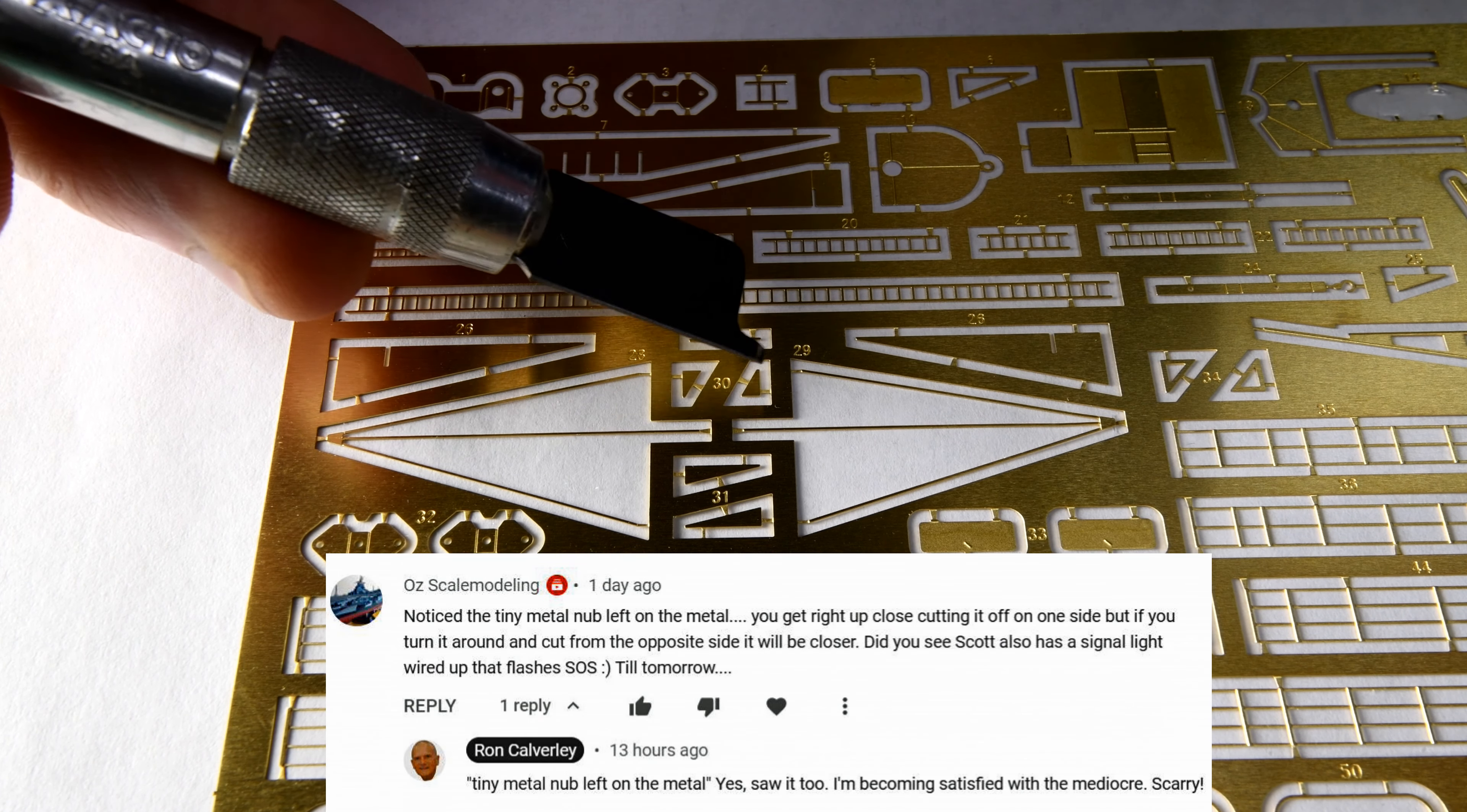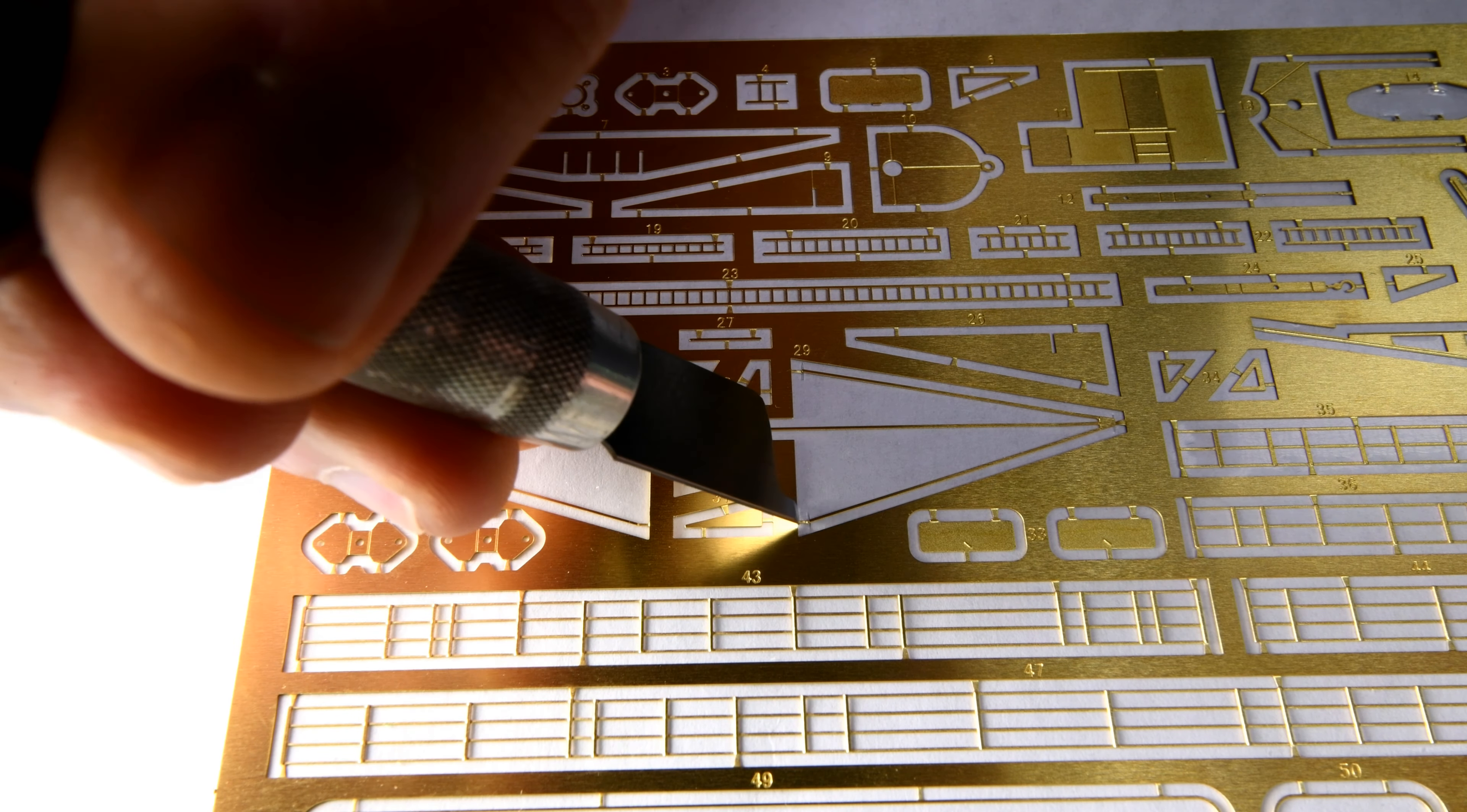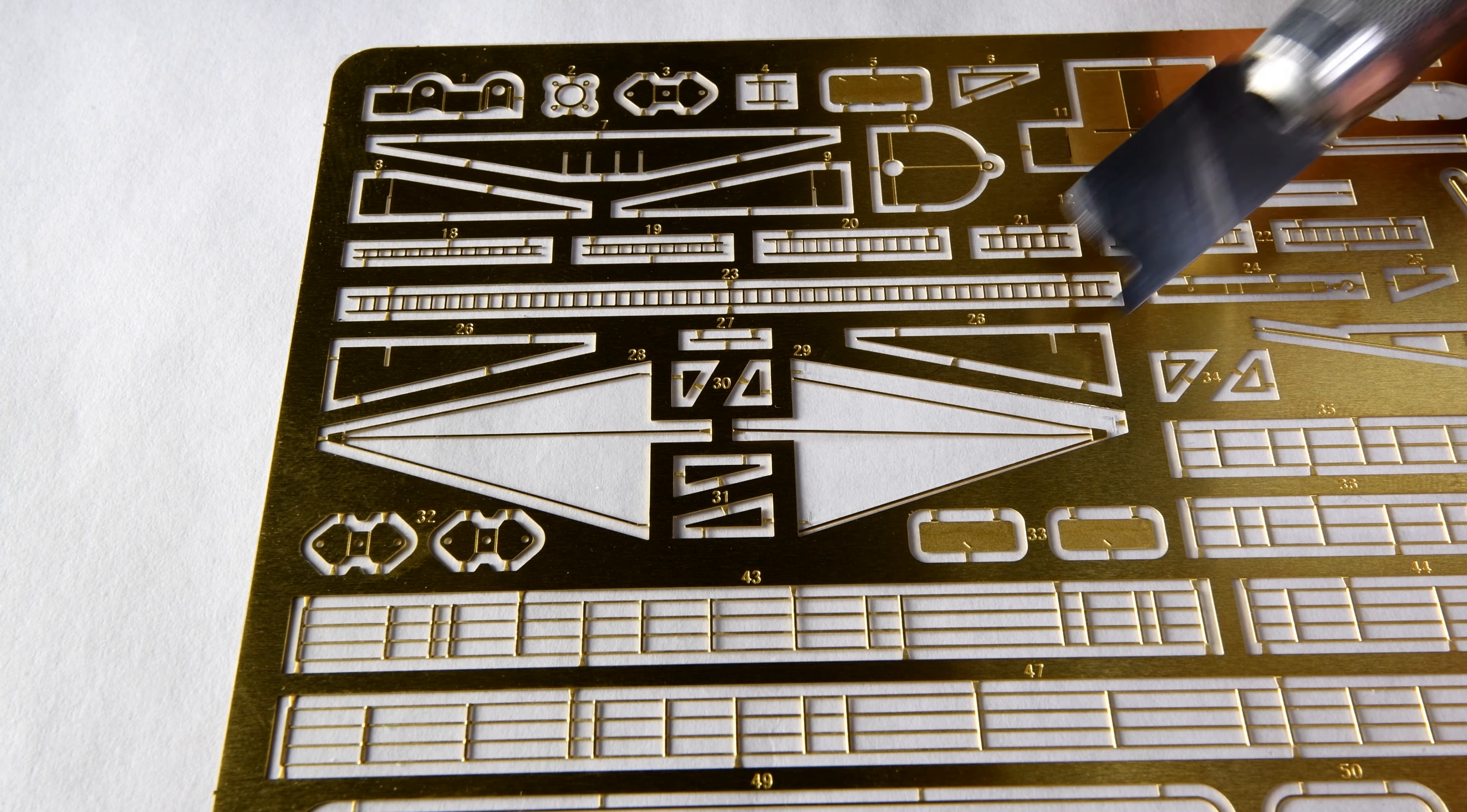Now Aussie Peter mentioned to me how I'm not doing a very good job. Well, he didn't put it in these words, but he mentioned how I'm leaving part of the tab on the part and I've got to do a better job of having a nice clean cut. I replied back that I am becoming satisfied with the mediocre, and I've got to get back to the way I was a year ago when I was doing the Bismarck and wanted to do a reasonable job.